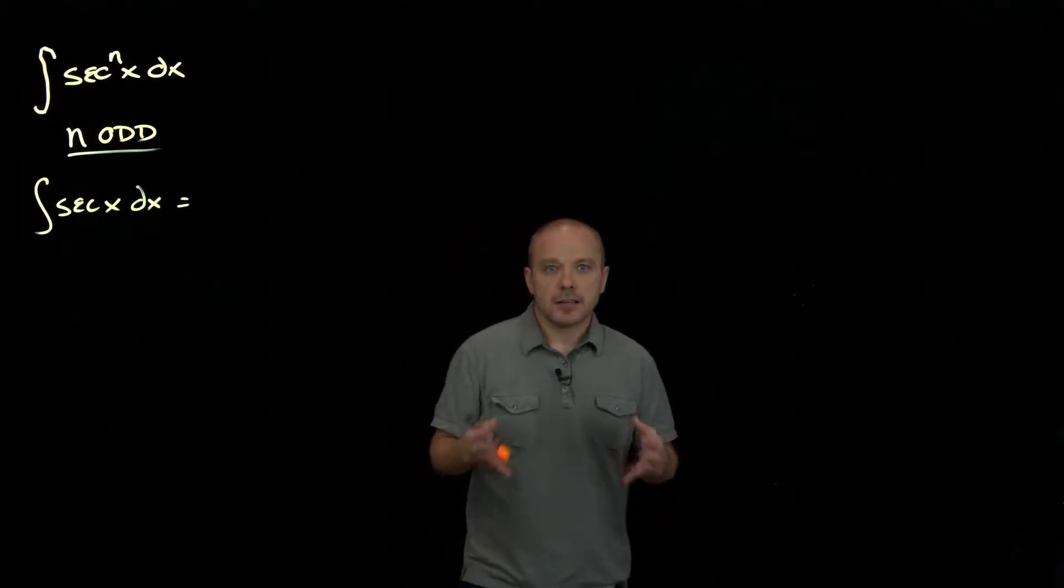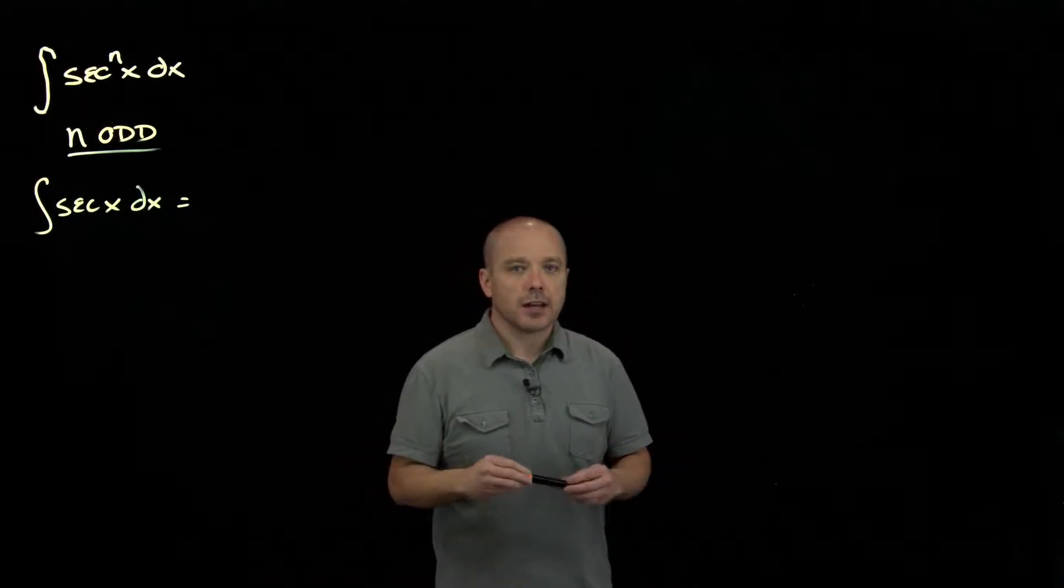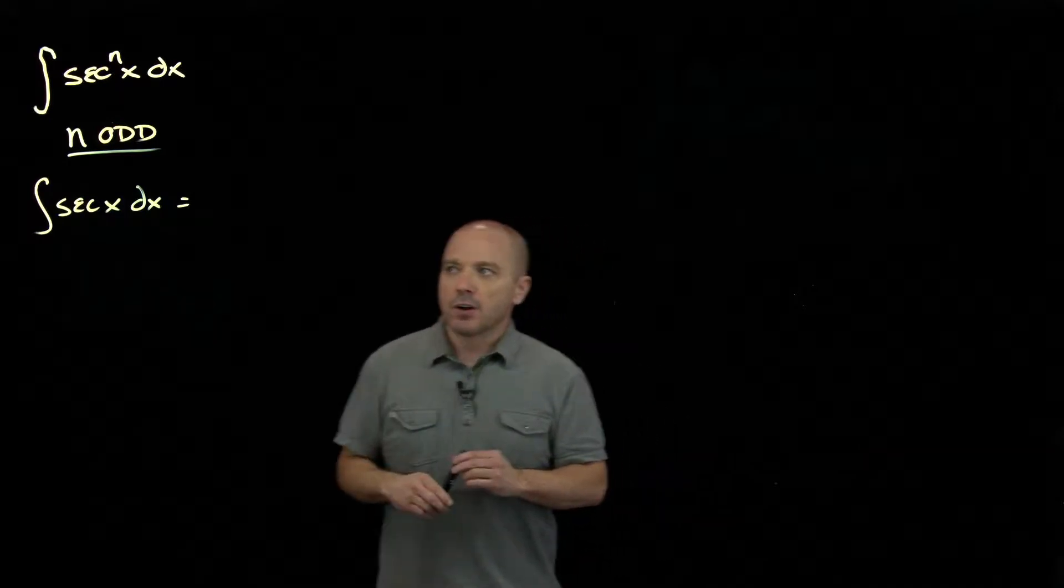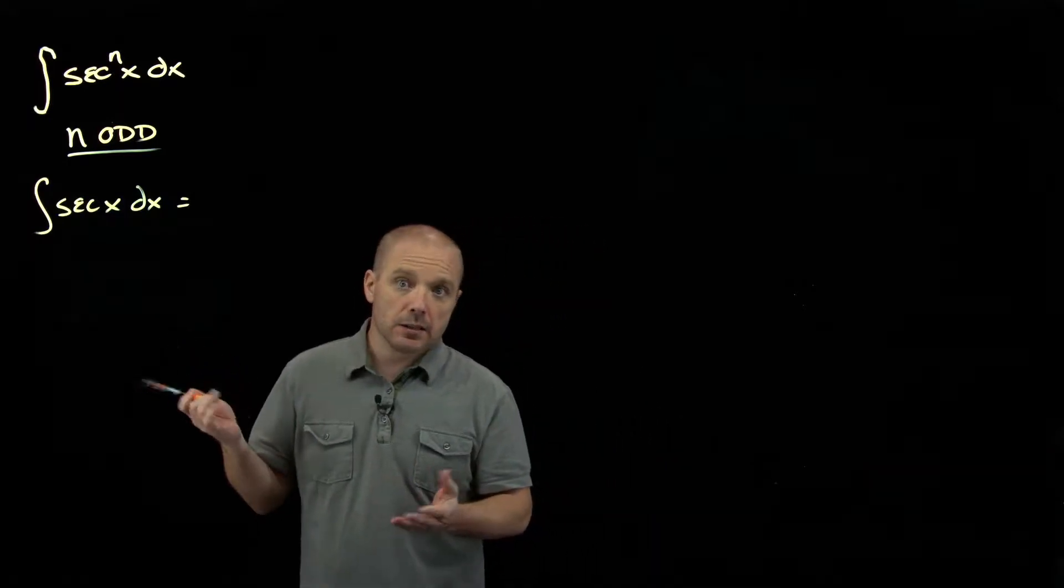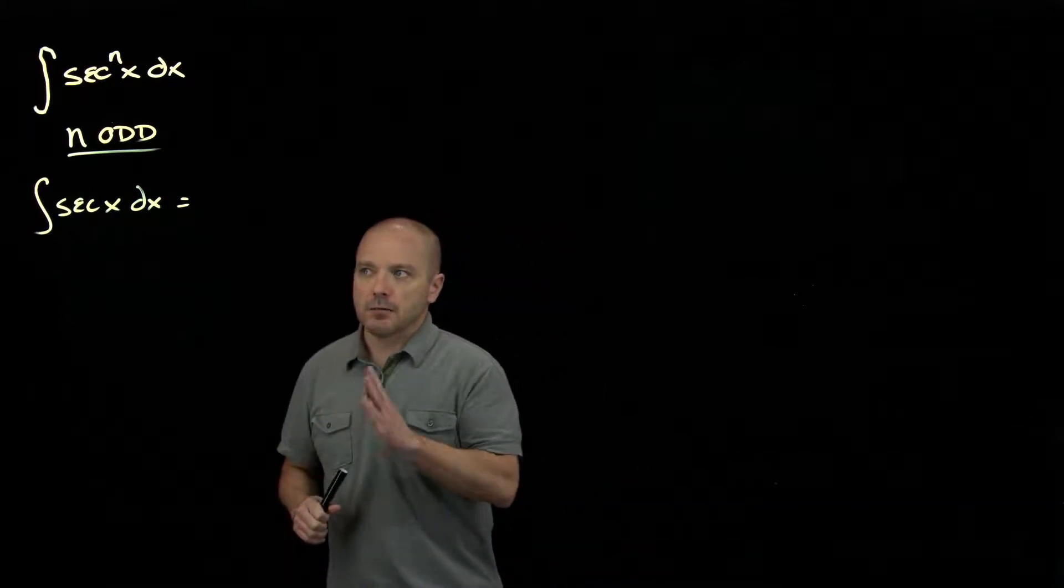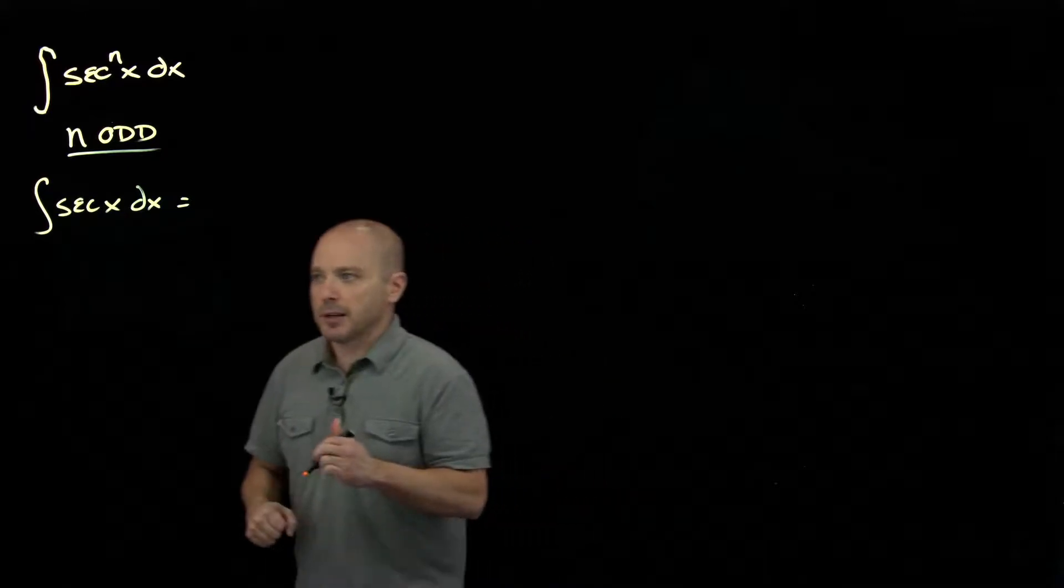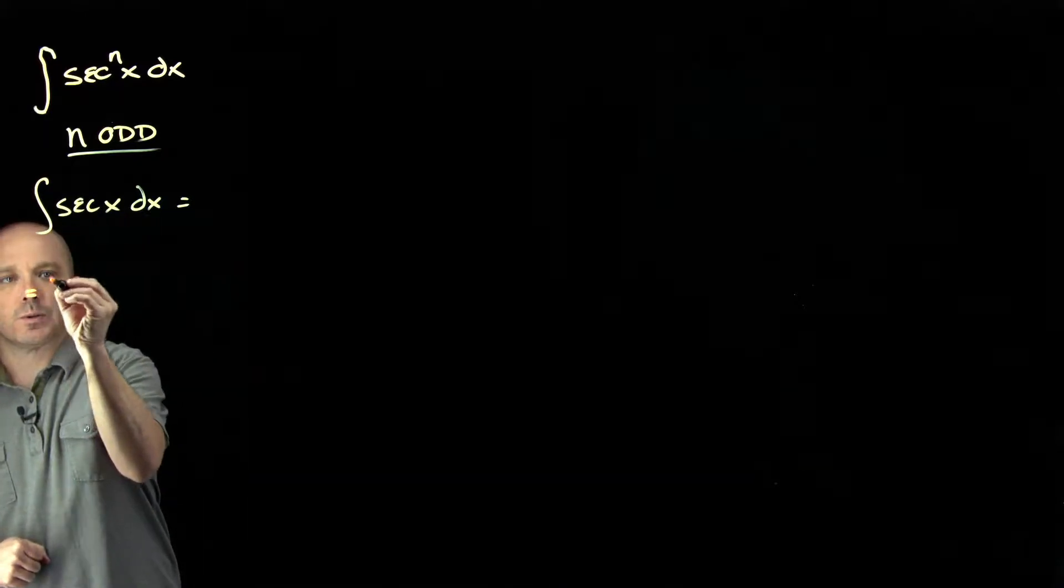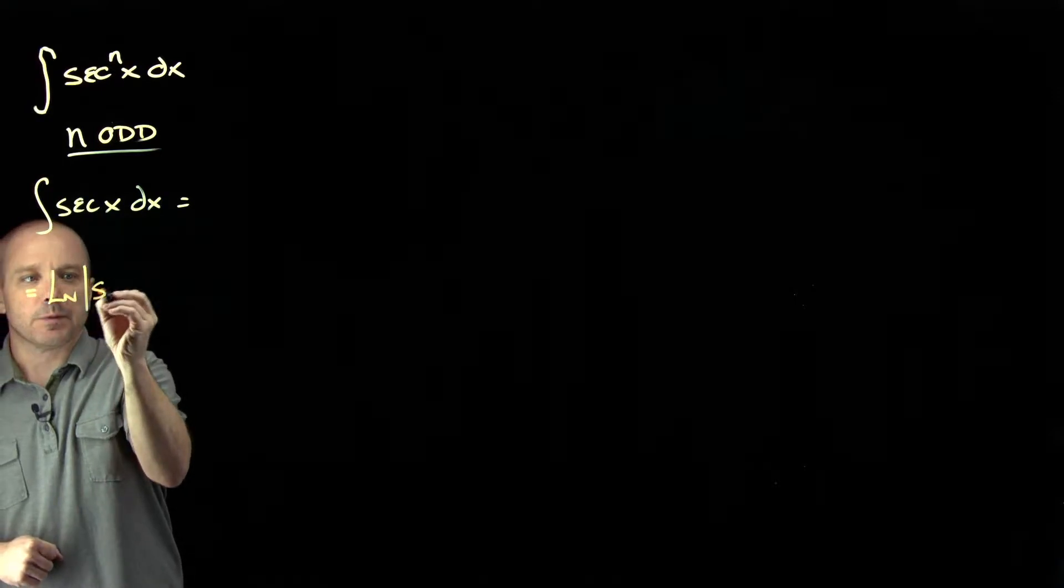We looked at even degrees of secant, so now let's look at odd, and it's a different approach. First of all, the smallest odd degree would be secant to the first, and we know that one from calc 1. It involved an algebra manipulation, but we saw that was equal to natural log absolute value of secant plus tangent.